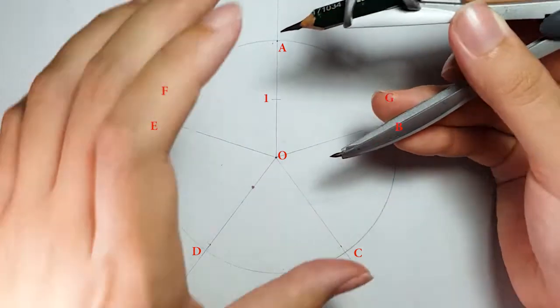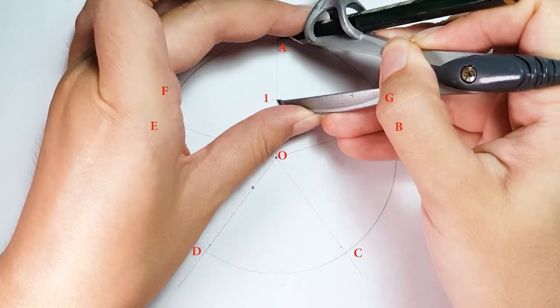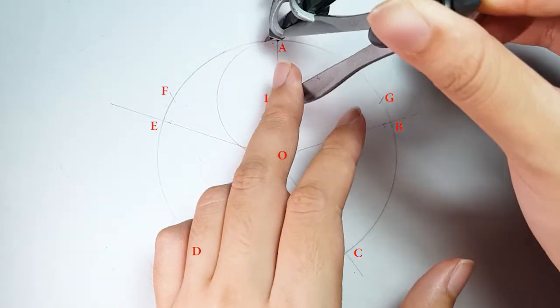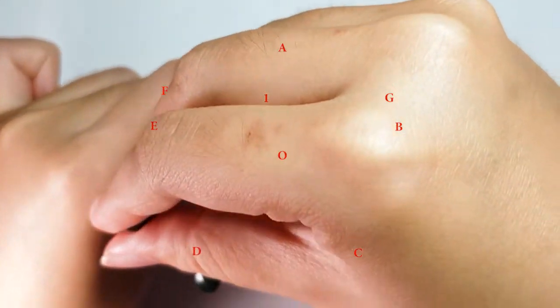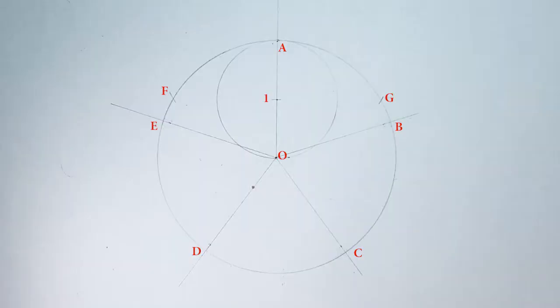Next, place your compass on point 1 and adjust to point O, then draw a circle. Make sure the circumference size doesn't exist between these points.